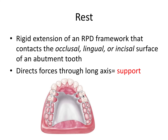These little parts at the ends of the minor connectors are called the rests, and that's what we'll start talking about right now. The rests are rigid extensions of an RPD framework that contact the occlusal, lingual, or incisal surface of an abutment tooth. The function of these rests is to direct forces through the long axis of those abutment teeth, and this provides support.